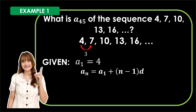Now let us check 7 and 10. What number are we going to add with 7 to get 10? It is 3 also, because 7 plus 3 is 10. The same goes with 10 and 13 — 10 plus 3 is 13. And 13 plus 3 gives us 16. Thus, our common difference is 3.